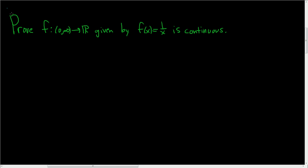In this video, we're going to go through the proof that f of x equals 1 over x is continuous for all positive values of x. Before we do the proof, let's go over how to figure out the proof, which is much more important than the proof itself.